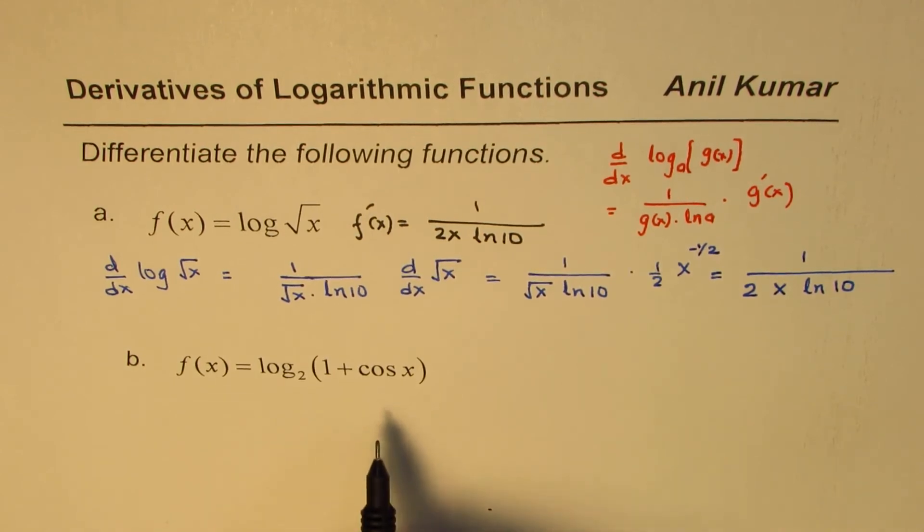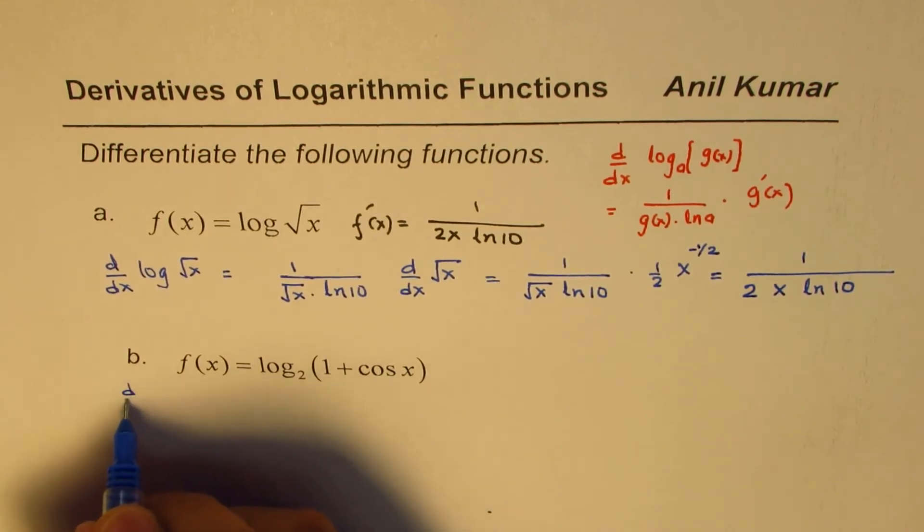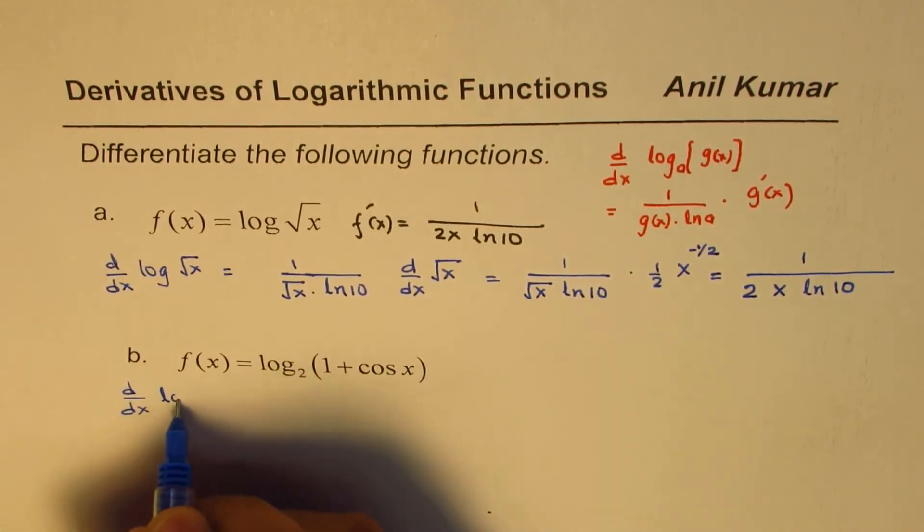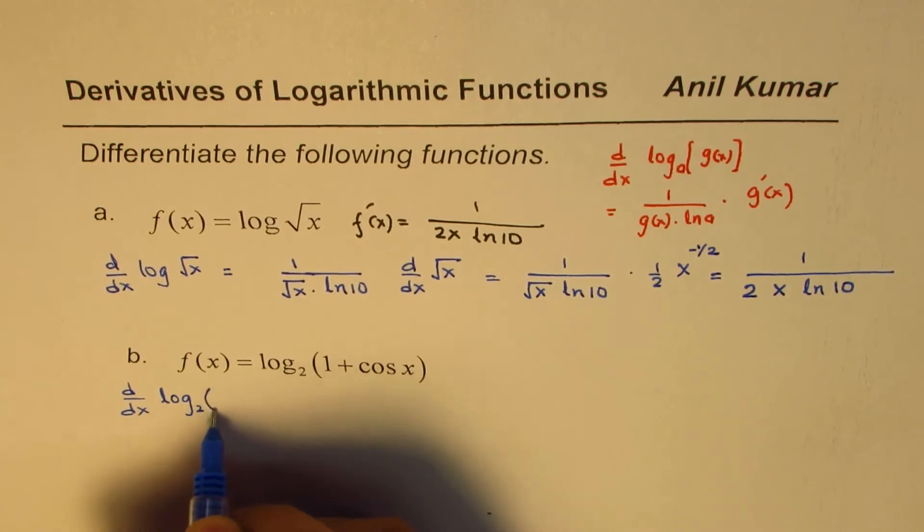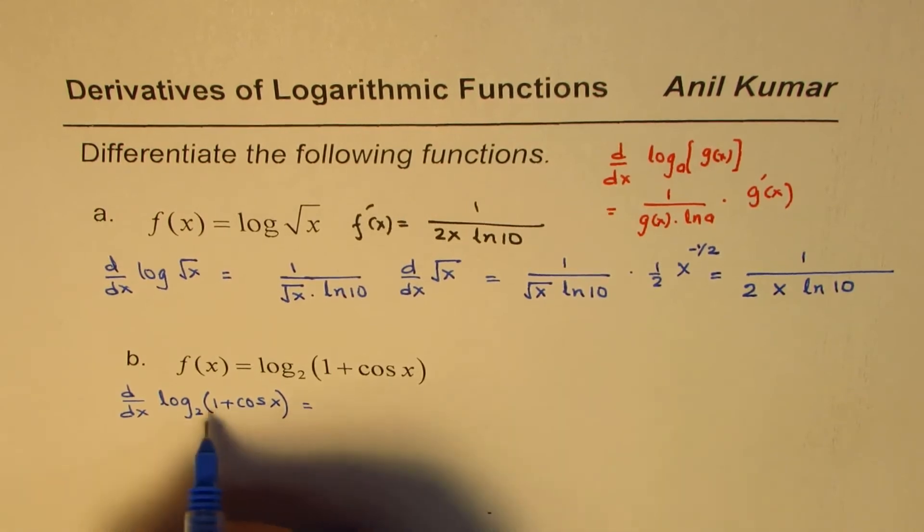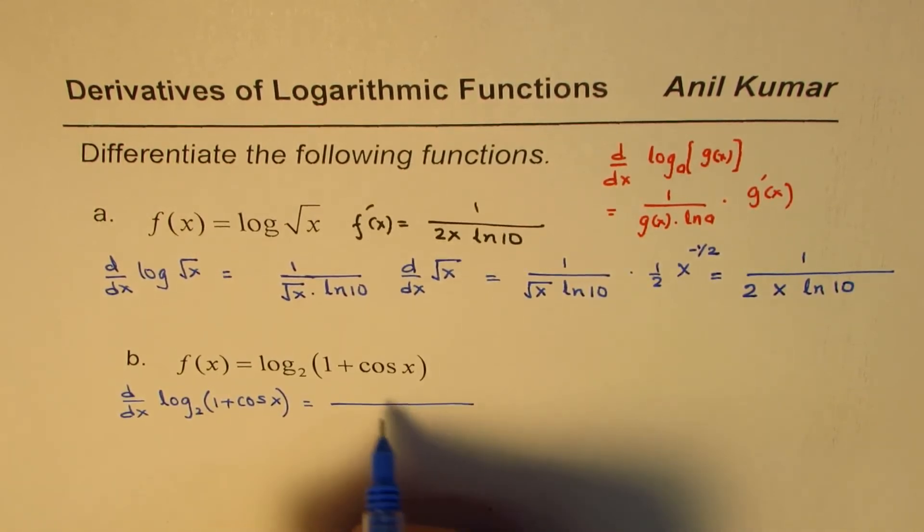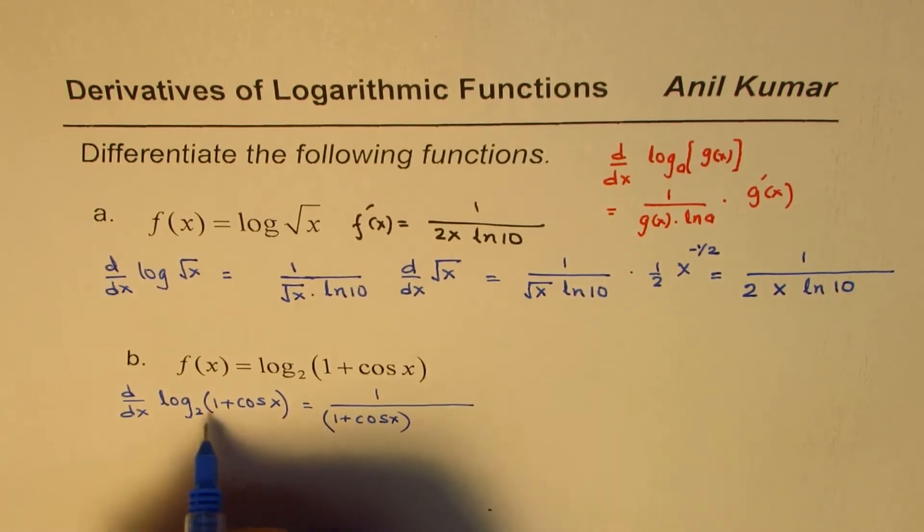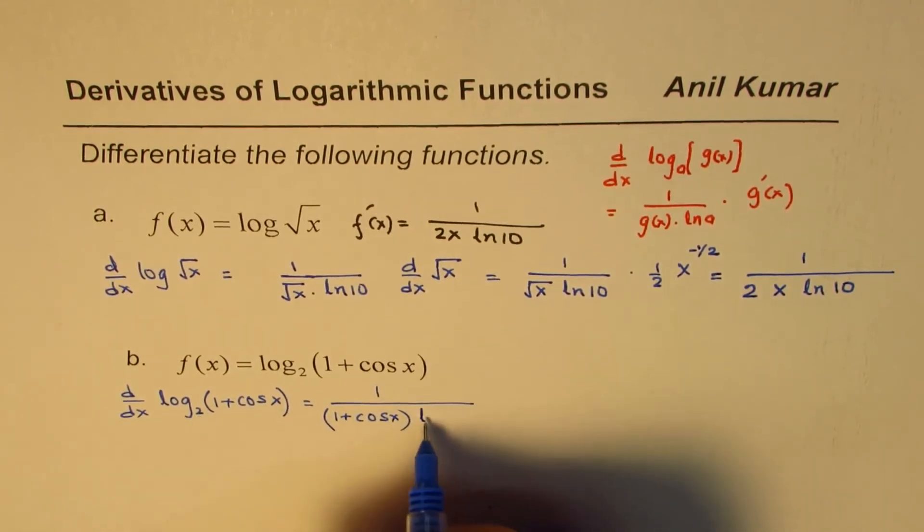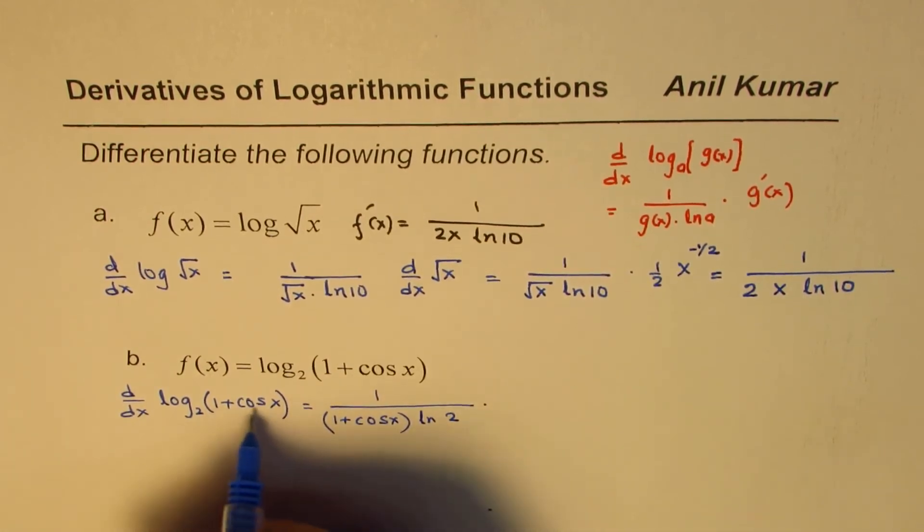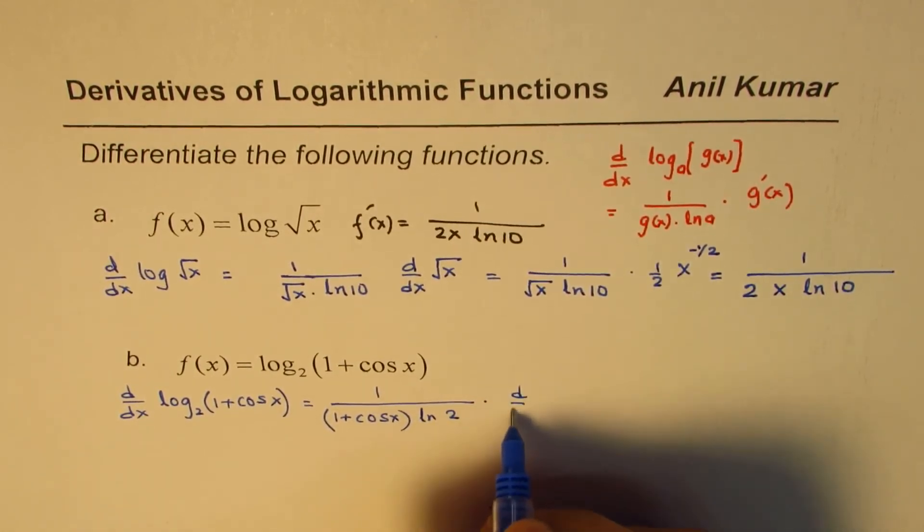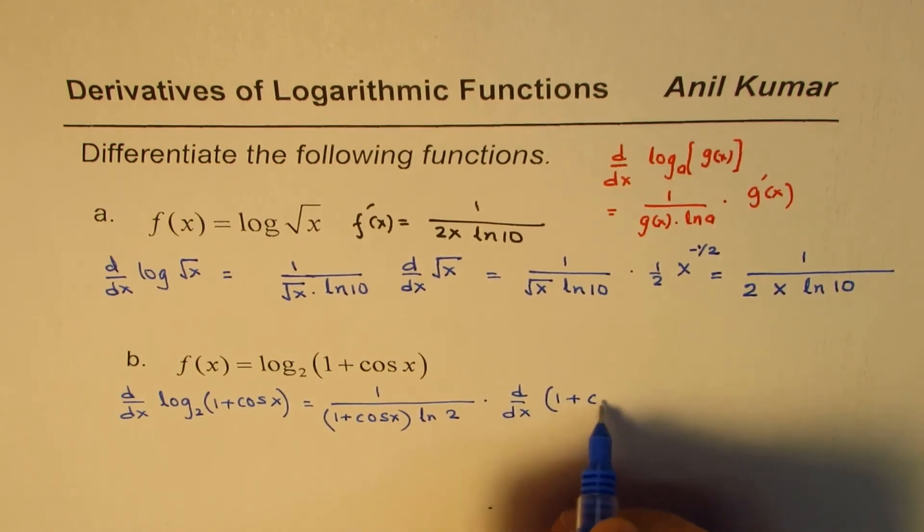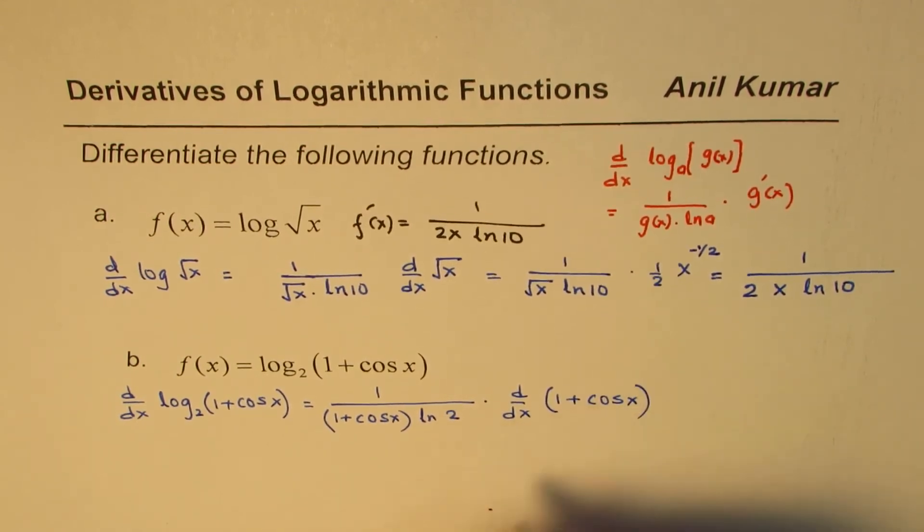Now, let's do the next one, applying the same strategy. So, we get here derivative of log₂(1 + cos x), will be 1 over the function, which is 1 + cos x, times ln 2, times derivative of inside function, d/dx of 1 + cos x.